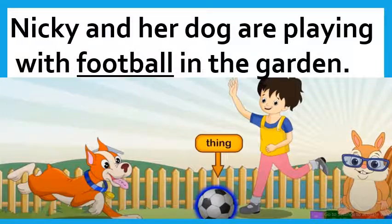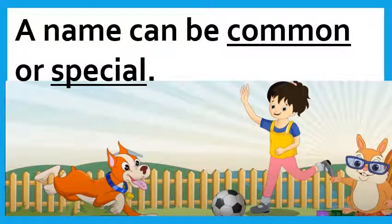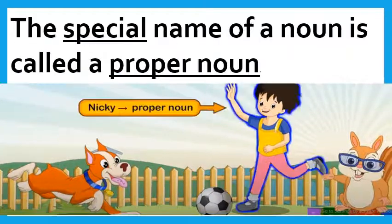Will you remember this? Now come to the two types of nouns. Two types of nouns are common nouns and proper nouns. A name can be common or special. The special name of a noun is called a proper noun. If it's a special name, it is called a proper noun, and we always use a capital letter for proper nouns. For common nouns, we use a small letter as they are not special.